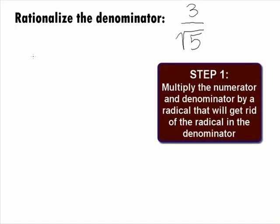In Step 1, we are going to multiply the numerator and denominator by a radical that will get rid of the radical in the denominator.